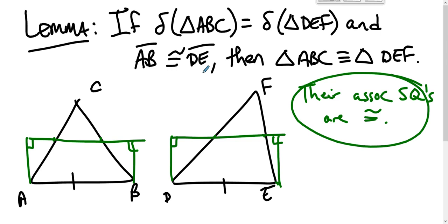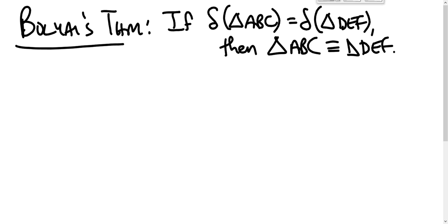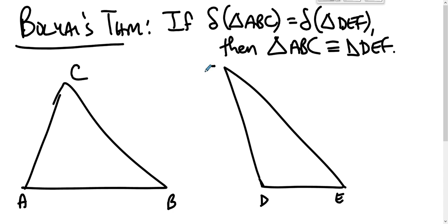and Bolyai says we're going to use the lemma to show that that doesn't have to happen. So here's the rough idea behind the proof: you've got triangle ABC, you've got triangle DEF. The defects are equal. If one of the segments is congruent—if one of the corresponding pairs of segments is congruent—then we're done by the lemma. So we're going to assume without loss of generality